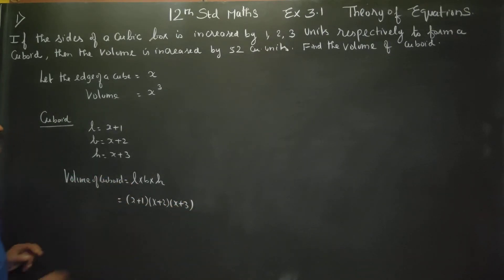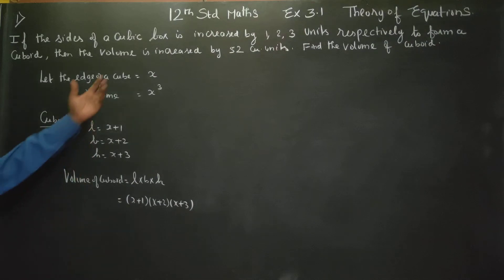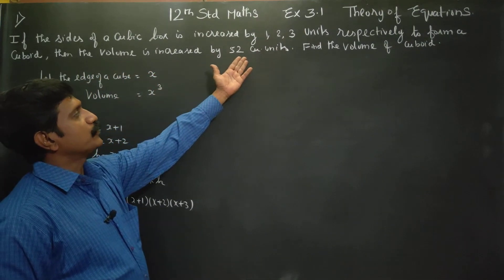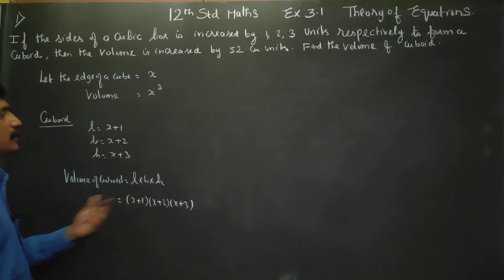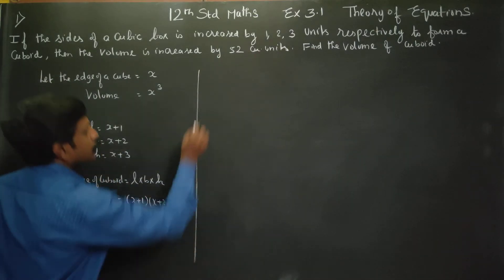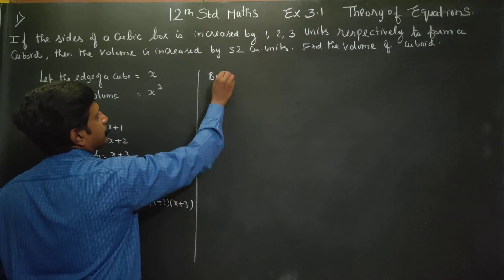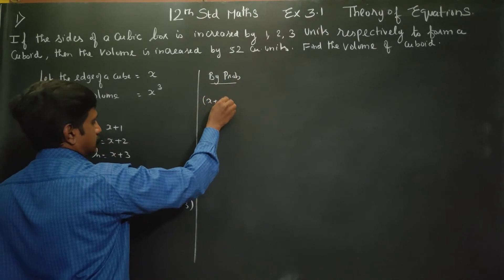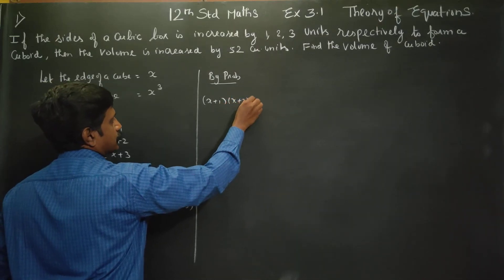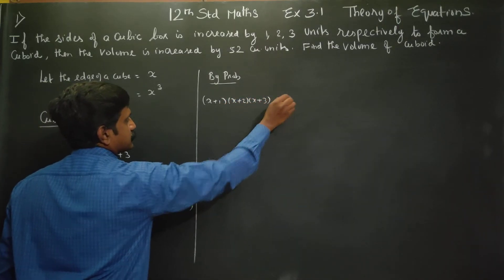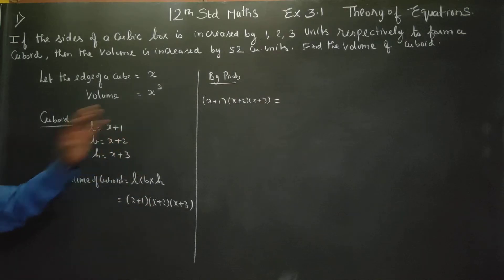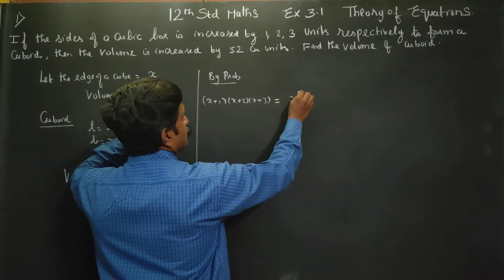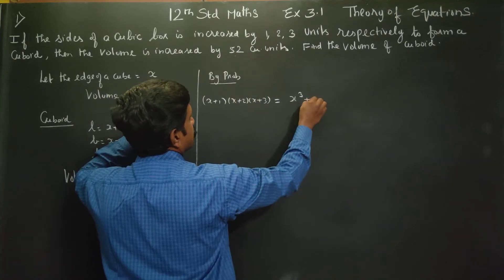This is the new volume. By the problem, the volume of the cuboid (x+1)(x+2)(x+3) is increased — the original volume x cubed is increased by 52. So: (x+1)(x+2)(x+3) = x³ + 52.